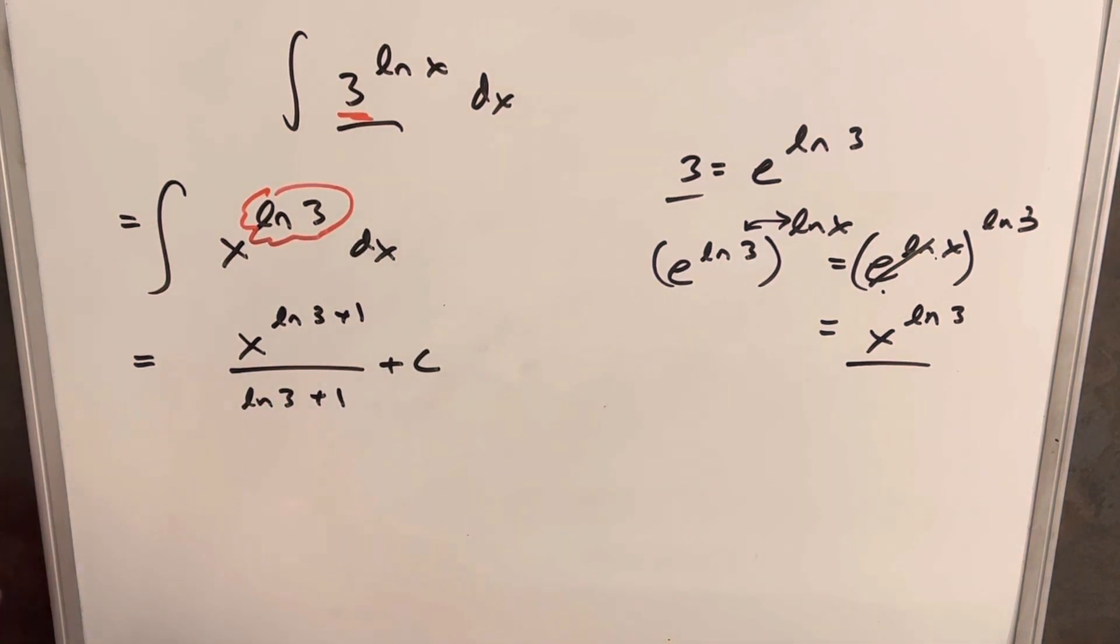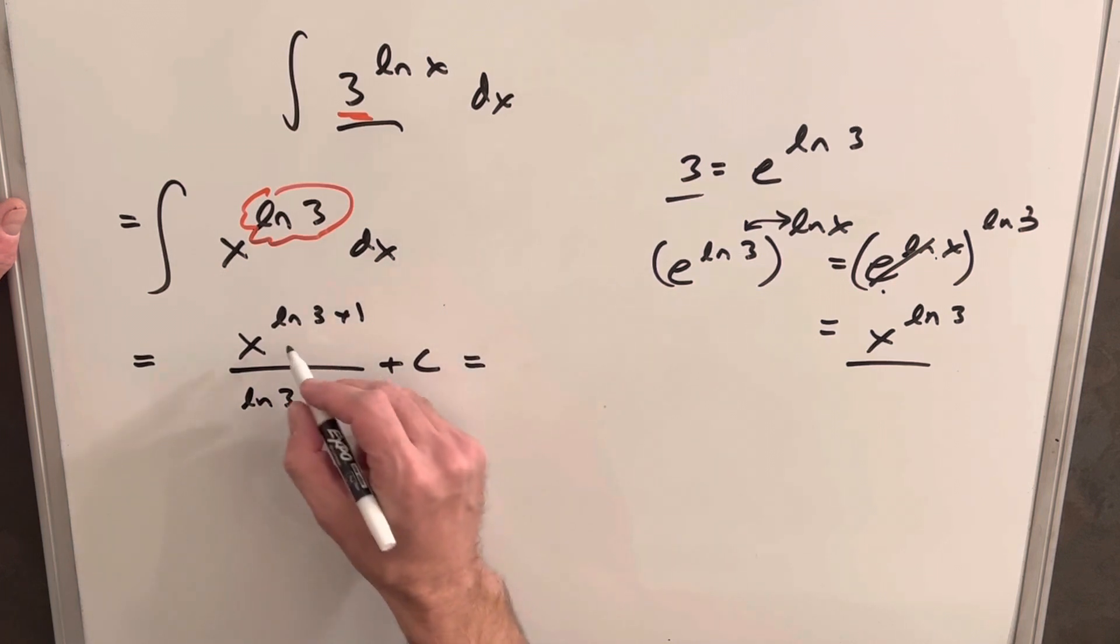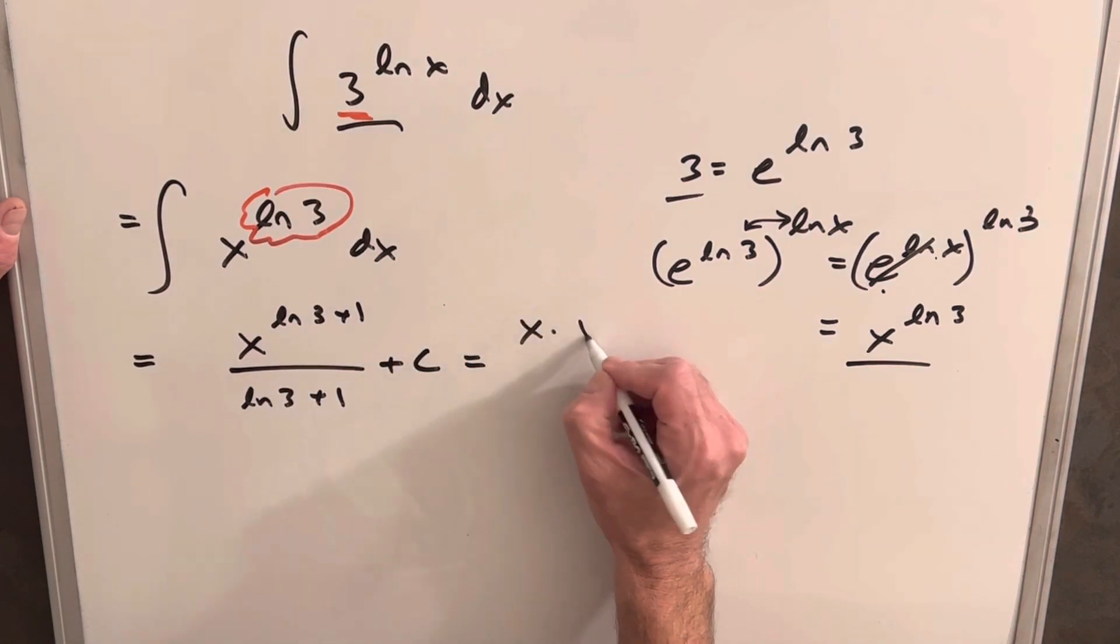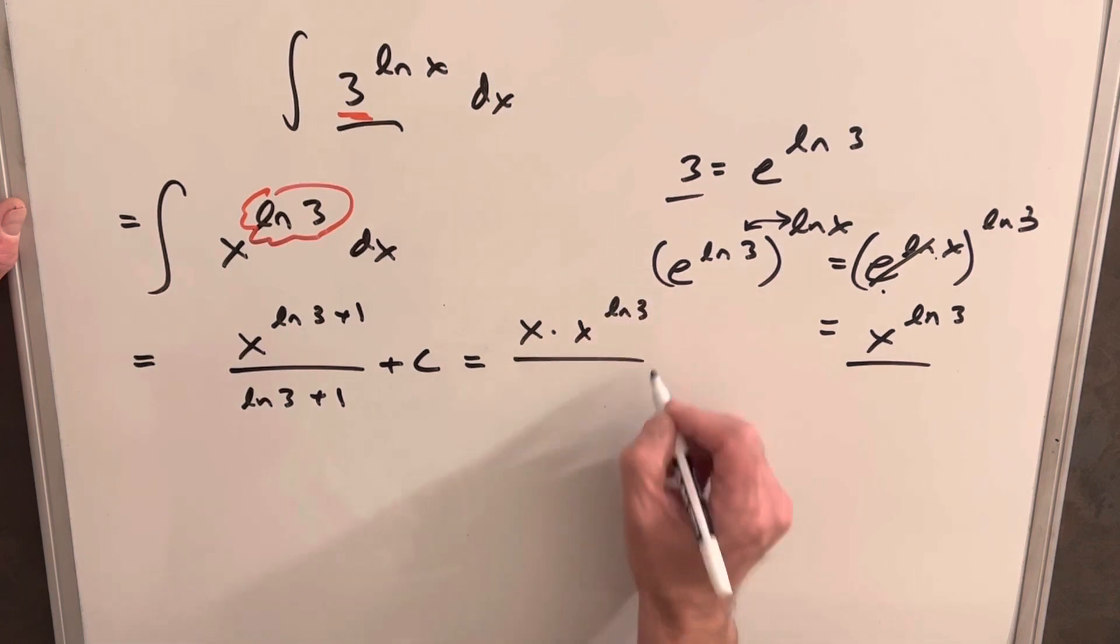And then this is technically correct, but what I like to do is get it back. It just seems it's kind of polite to get it back in the original form. I don't know why, but we always do that. So let's try to get it back the way it was. So then let's rewrite this as a product so we can write this as x times x to the ln 3 over ln 3 plus 1.